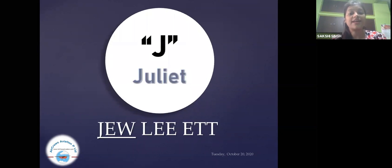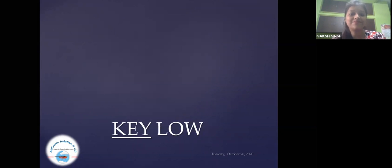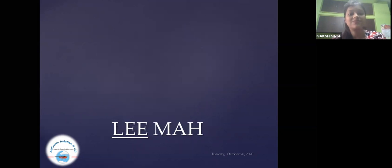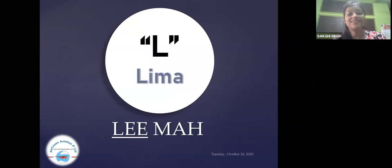The next one is J. That is Juliet. It's the K. That is kilo. And L is Lima. Not a Lima. It's Lima.